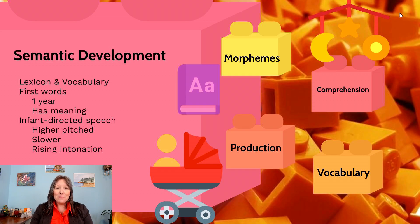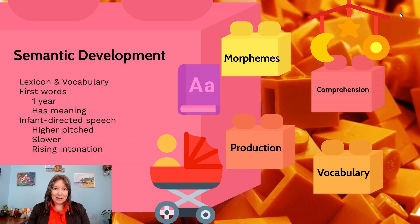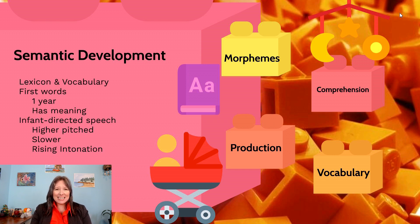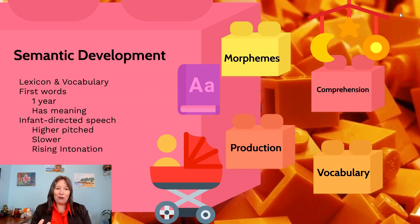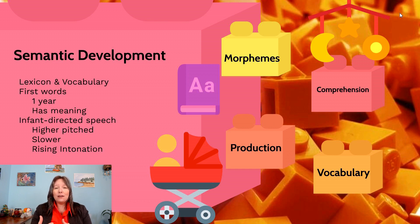Aside from phonological development, we also need to discuss semantic development. One way to describe semantic development is really the development of the meaning of language — not just the sounds, but putting meaning behind those sounds, having a vocabulary, having a lexicon, which is a fancy word for vocabulary. What we know is that though we're cooing and babbling for the first year of life, we really produce our first meaningful word roughly around our first birthday.